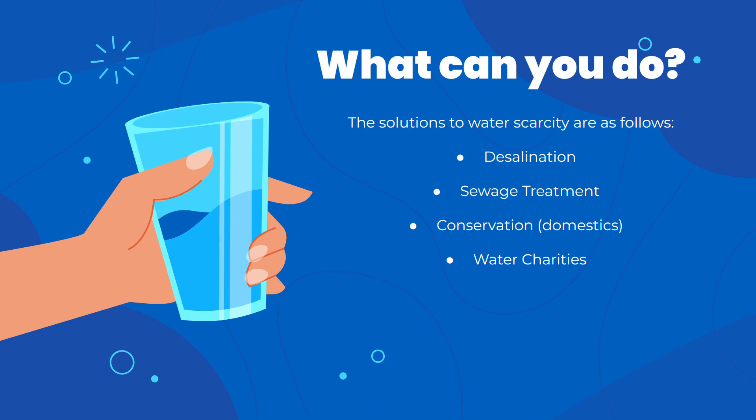Now we're going to talk about the solutions to water scarcity. The easiest solutions are desalination and sewage treatment, which we explained earlier, and the conservation of water domestically — such as turning off the tap while brushing your teeth, flushing the toilet less, not washing your hands excessively, and generally reducing the amount of water you use at home to only the necessities.